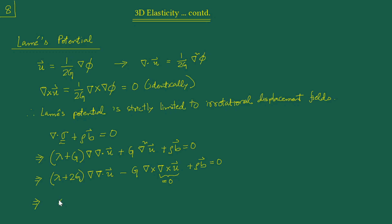What we end up with is: (λ + 2G) times grad(∇²φ̃) plus the body force ρb equals zero. The body forces are again causing a complication. Looking back at the Helmholtz displacement potential, we had also ended up with equations involving Laplacians of φ and ω, and it was only when we set the body forces to zero that we could proceed to find more convenient forms.